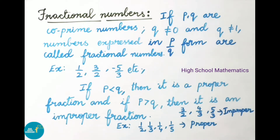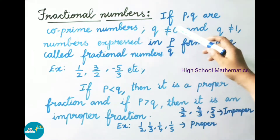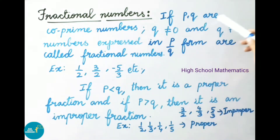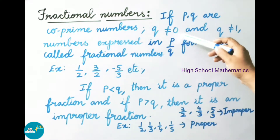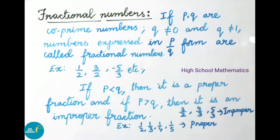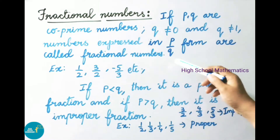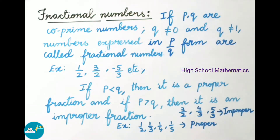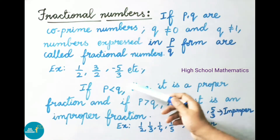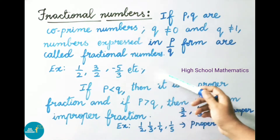See now what is a fractional number. If P and Q are co-prime numbers and Q is not equal to 0 and Q is not equal to 1, then the numbers expressed in P by Q form are called fractional numbers. Examples: 1/2, 3/2, -5/3, etc.